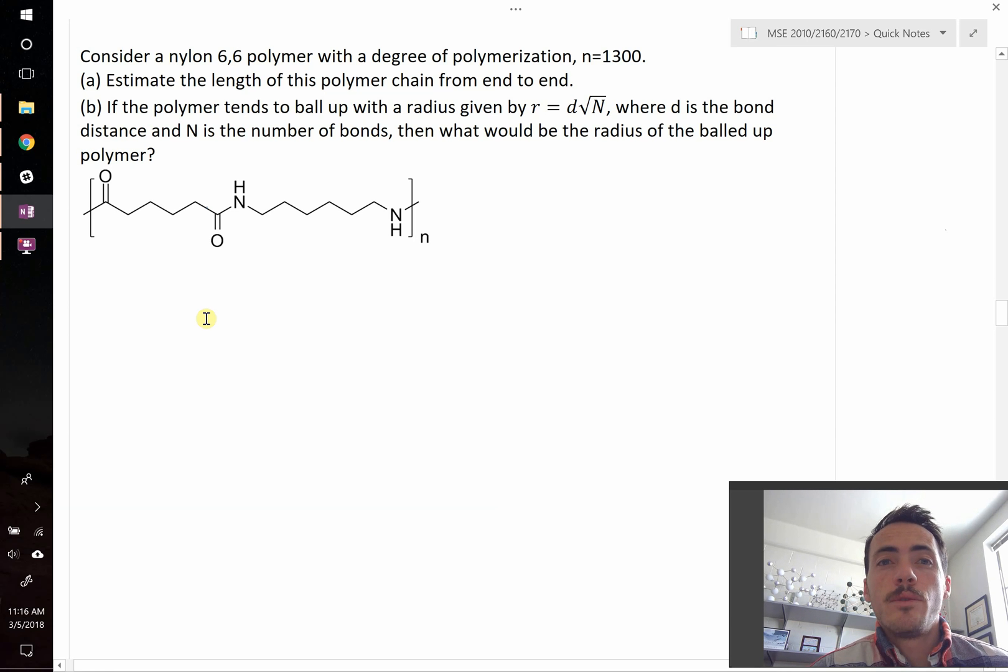Okay, this question has to do with the shape and the length of polymers. The question says, consider nylon 6,6 polymer, and it has a degree of polymerization of n equals 1300.